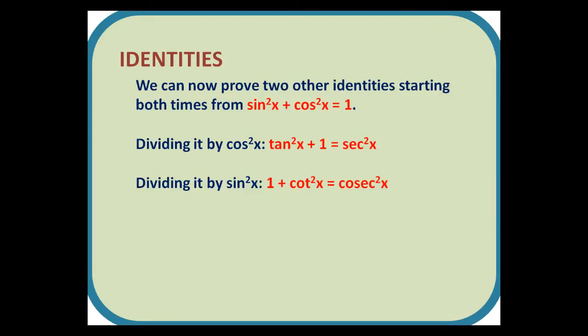Identities. We can now prove two other identities starting both times from sin²x + cos²x = 1. We can divide that by cos²x, which gives us tan²x + 1 = sec²x. Alternatively, we could divide it by sin²x and get 1 + cot²x = cosec²x.